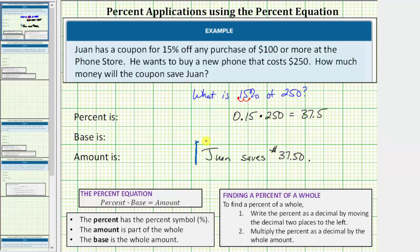Let's also go through the process of setting up a percent equation by first determining the percent, the base, and the amount. Where we know the percent has the percent symbol or the word percent, the amount is part of the whole, and the base is the whole amount.